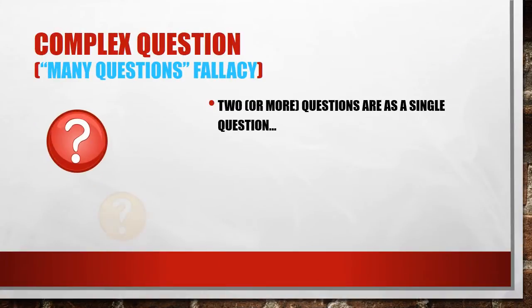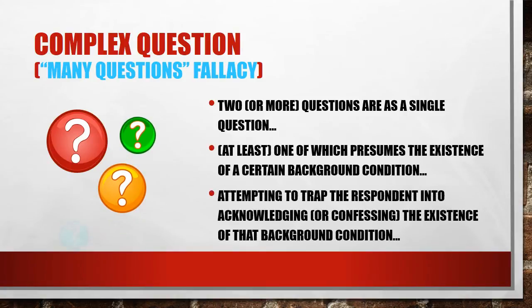Now, let's talk about complex questions, sometimes called by Aristotle the many-questions fallacy. That's when a person asks two or more questions as a single one, and the first question presumes the existence of a background condition. By tricking somebody into answering the question, they're trying to trap you into admitting the existence of that background condition.